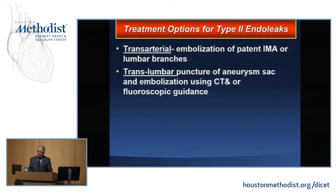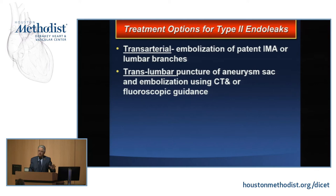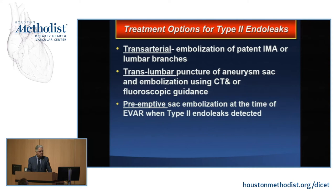Trans-lumbar embolization has been performed quite frequently and relatively successfully, but it typically requires CT guidance in the CT room, then transfer to an interventional suite — a process that can last up to five hours including logistics. Preemptive embolization at the time of the original procedure is another option, but since many endoleaks disappear by themselves, it's overly aggressive and could carry complications while prolonging the procedure.